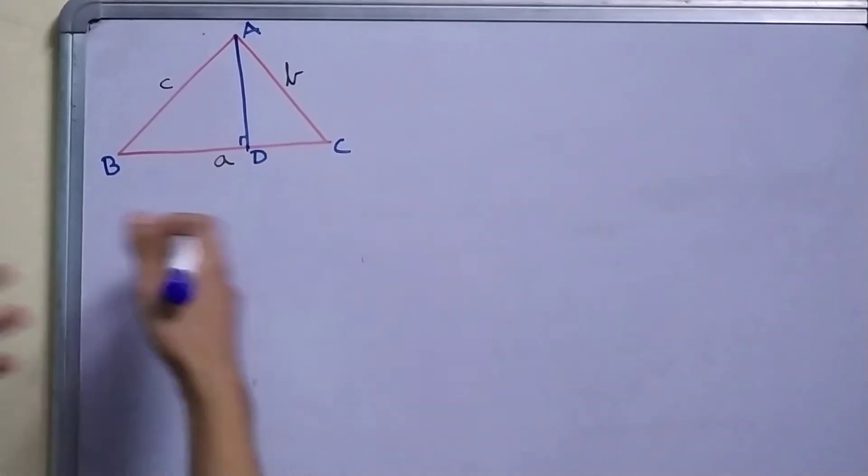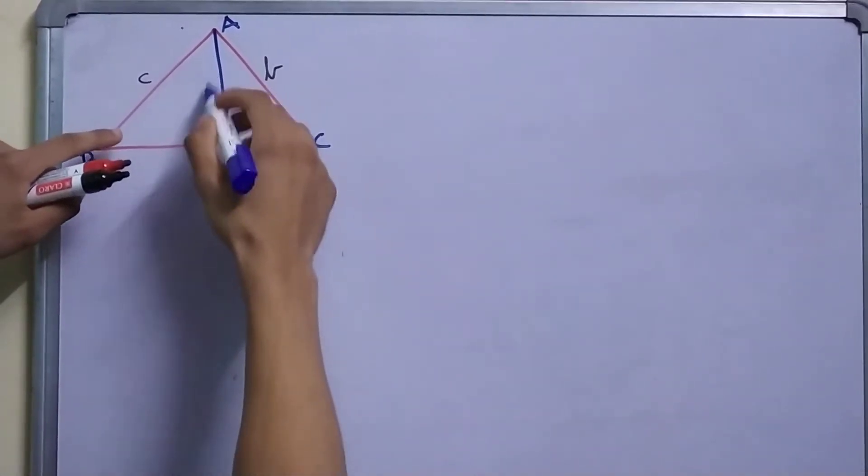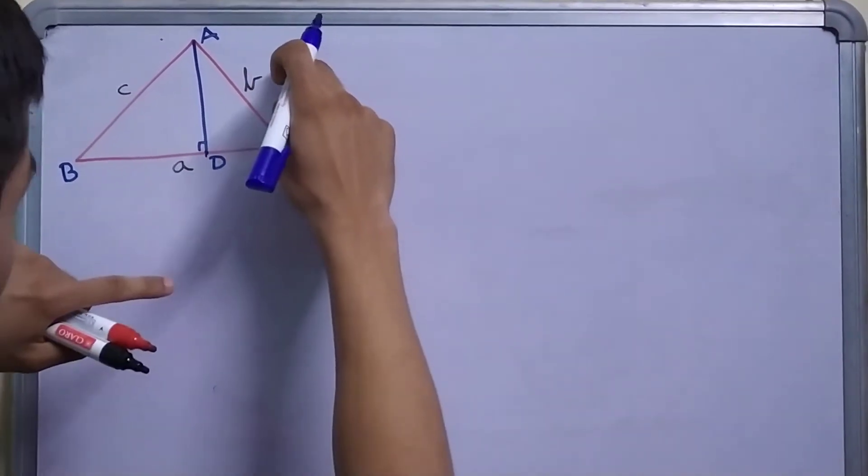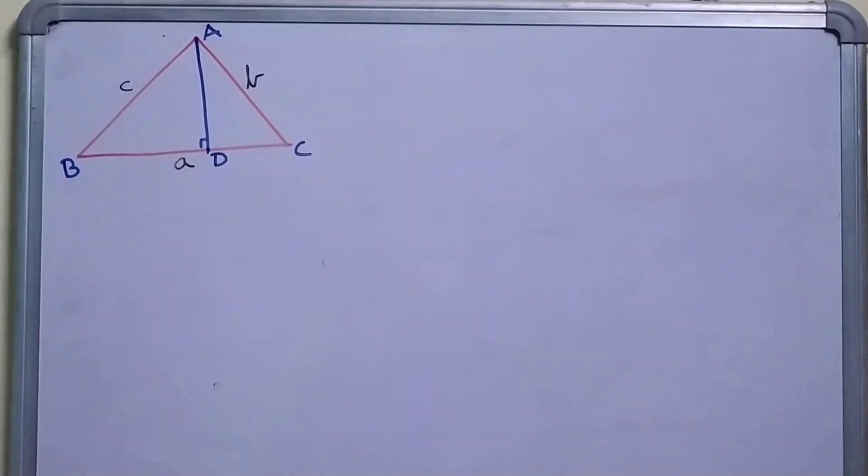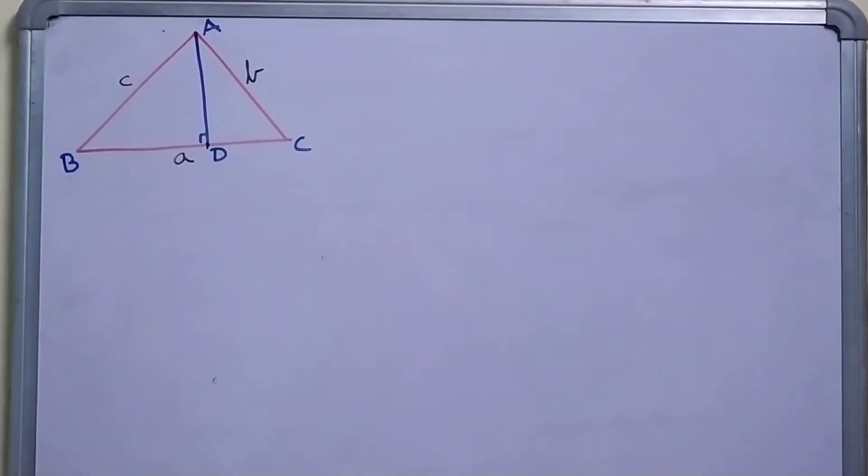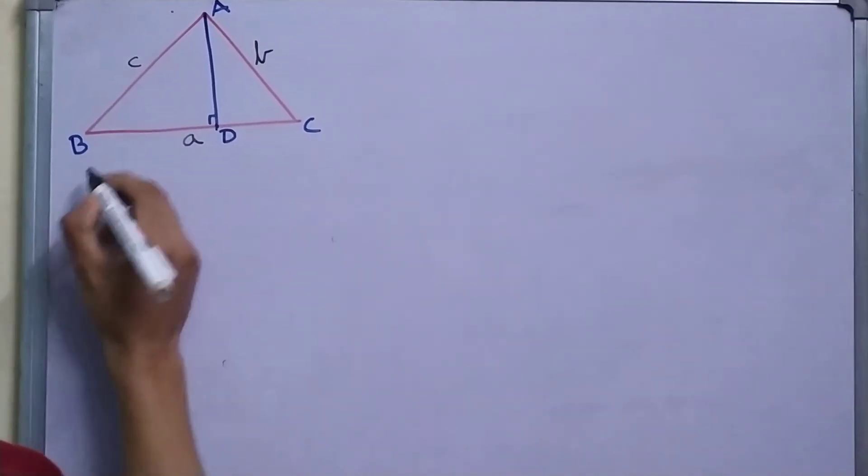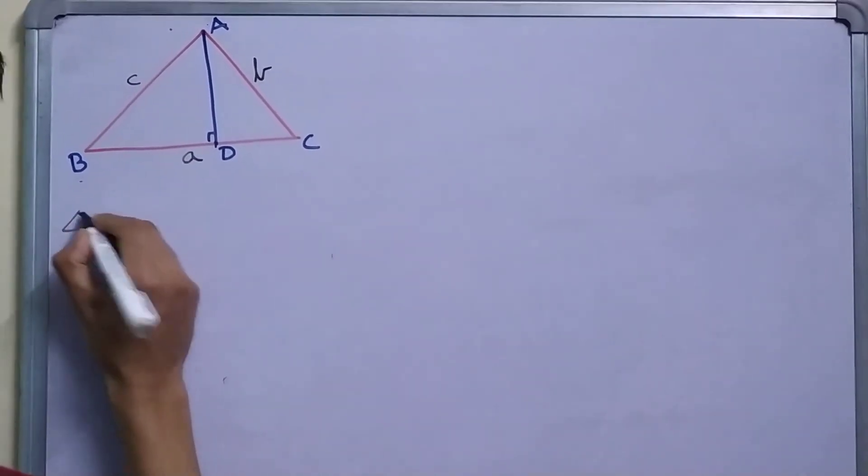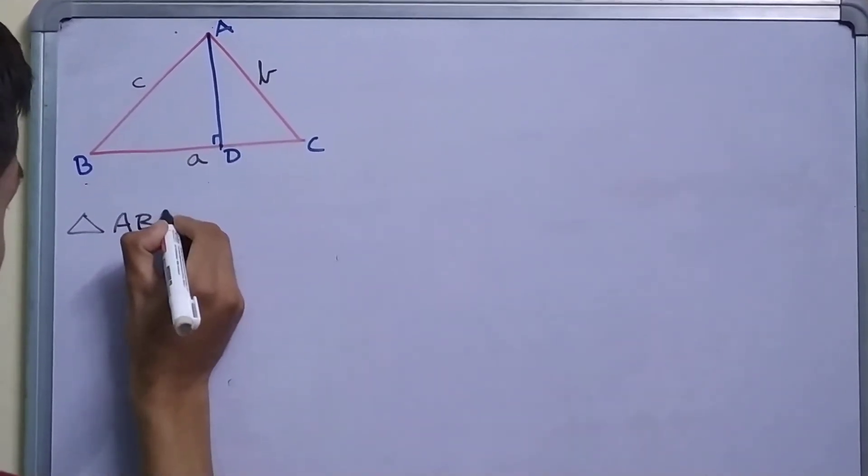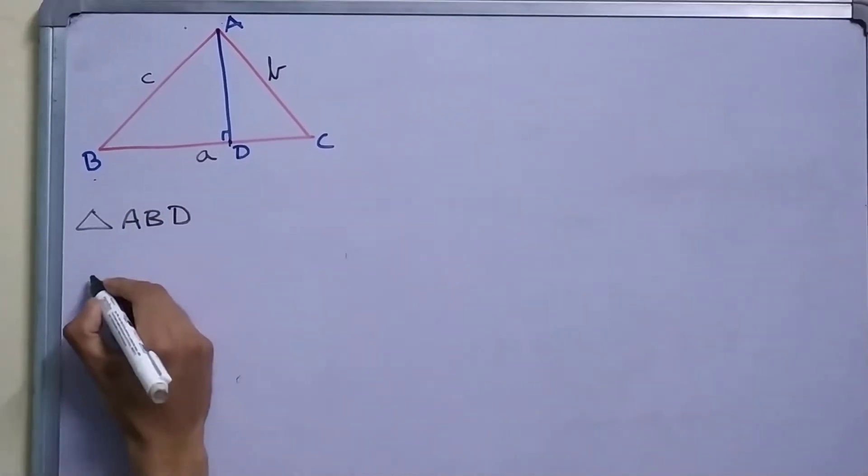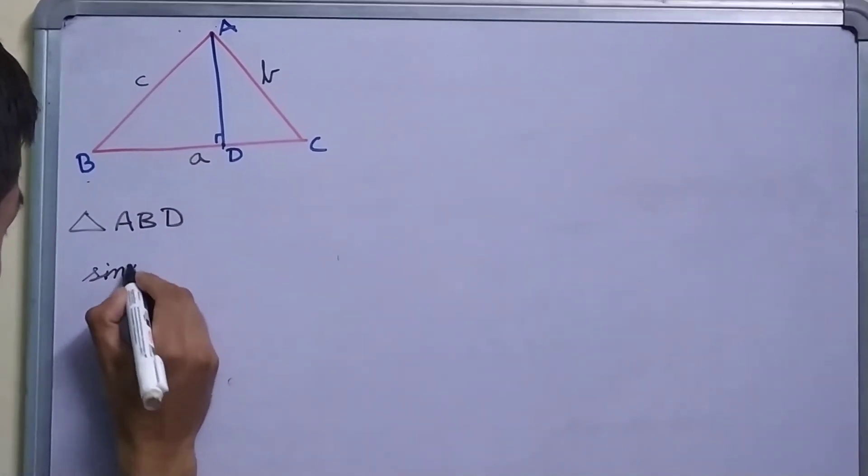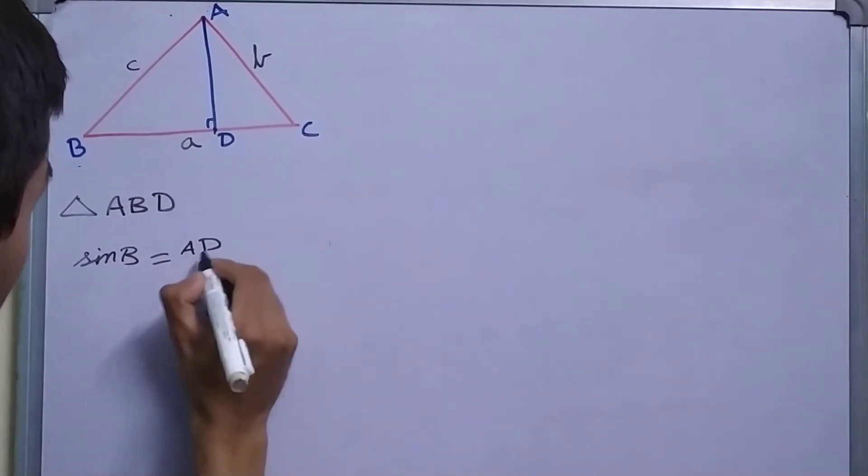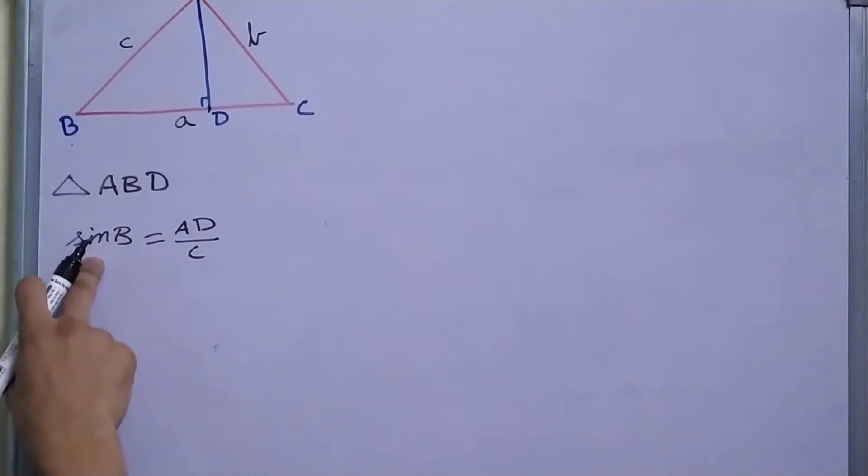And now let us relate AD with c and angle B and b with angle C. Let's see how this works. So in this triangle ABD, if we consider triangle ABD, sine of this angle B will be AD upon c.